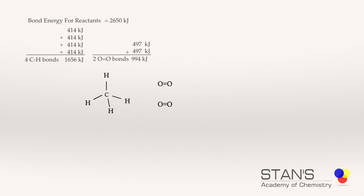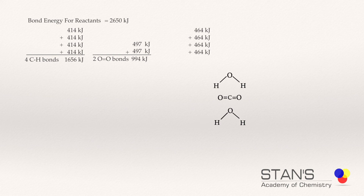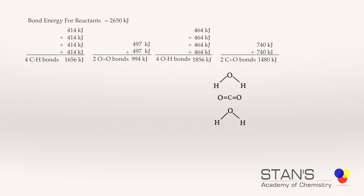Now that we have broken all the bonds in the reactants, the atoms are going to combine to form the products. In the products, there are four O–H bonds. The bond energy of the O–H bond is 464 kJ, so when four O–H bonds are formed it releases 4 × 464 = 1,856 kJ. When two moles of C=O bonds are formed, it releases 2 × 740 = 1,480 kJ. Whenever bonds are formed, energy is released. The total energy released when two moles of water and one mole of carbon dioxide are formed is 3,336 kJ.